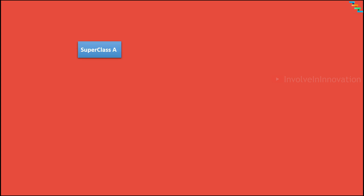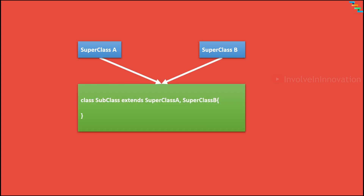Multiple inheritance is when a subclass inherits from two different classes. For example, if there are two superclasses — superclass A and superclass B — and you try to create a new subclass that extends both, this is called multiple inheritance, and this is not possible in Java.